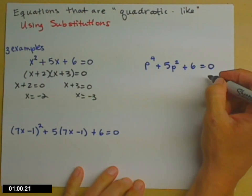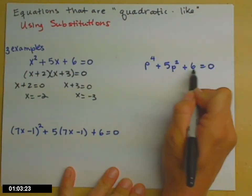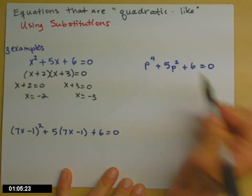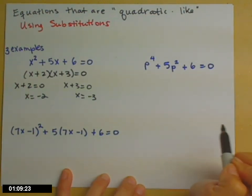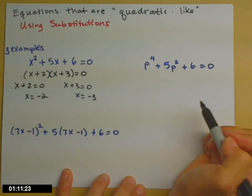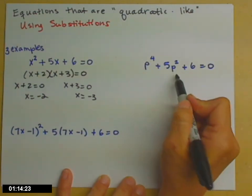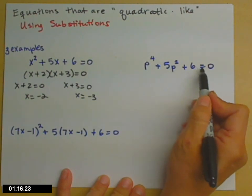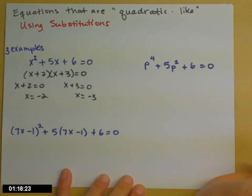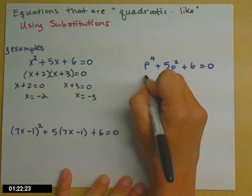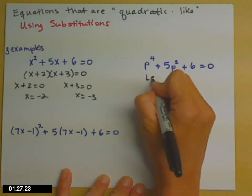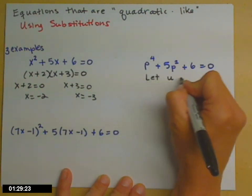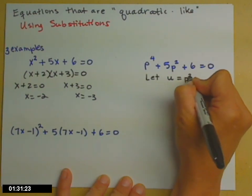In the next example, I don't have x squared — my highest power is x to the fourth. But it should have that same kind of feel to it. I have three terms: two with variables and one without, so I can't take out a greatest common factor. So here's where substitution comes in — we're going to change letters. We're going to let u equal p squared.